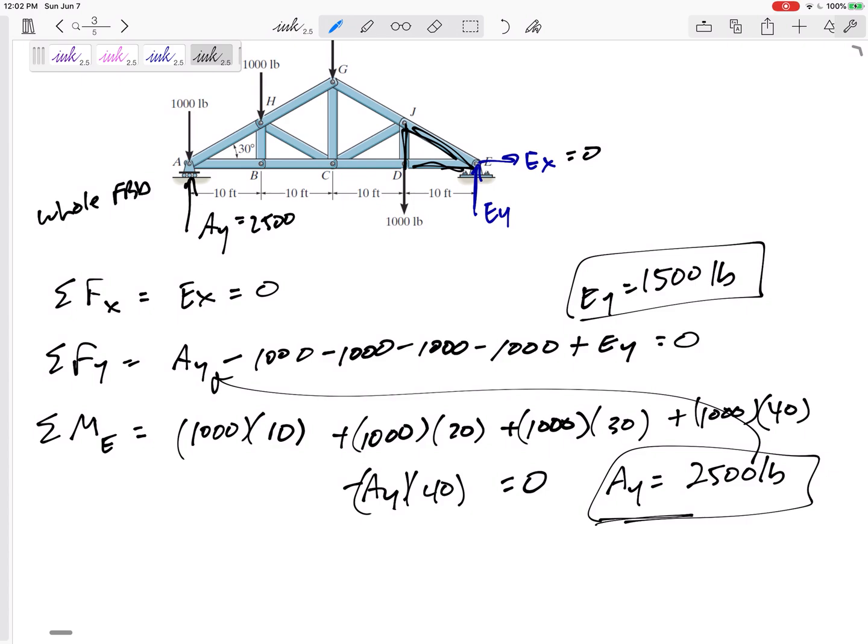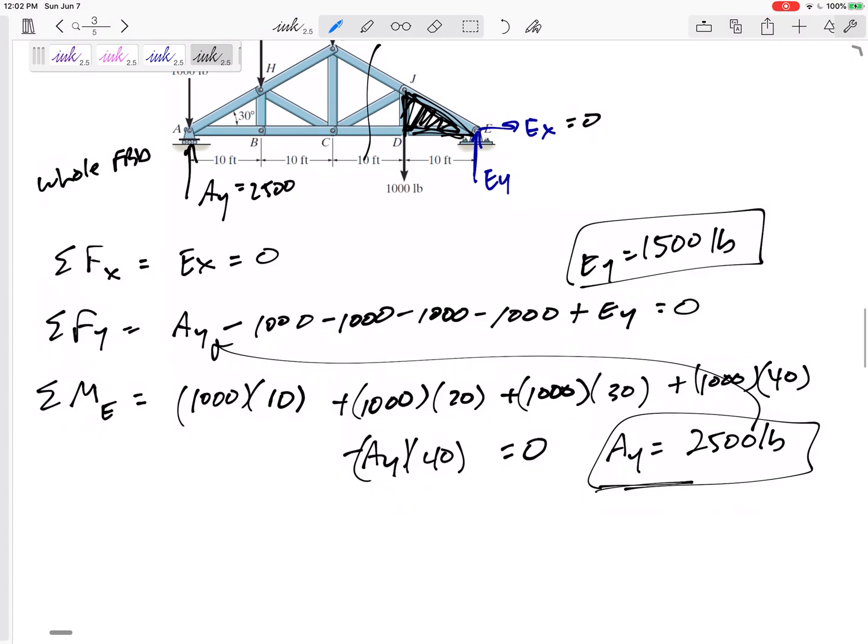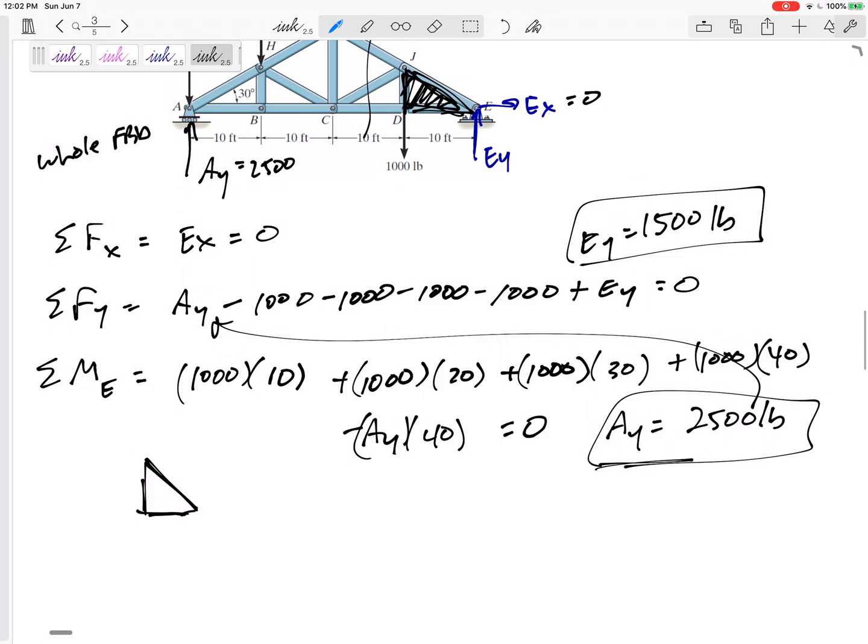Coming from this side, cutting it right here. Do the whole free body diagram before you even cut it. The whole free body diagram doesn't have the force in GJ, CJ, and CD. That doesn't show up. It doesn't show up until now that I'm going to cut it. And I decided to go ahead and look at the right half of it. You could have cut it and looked at the left half of it. We should still get the same answer.